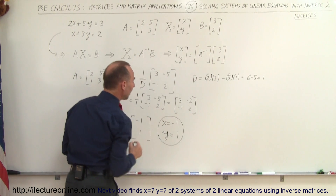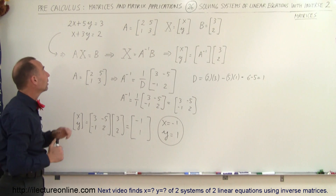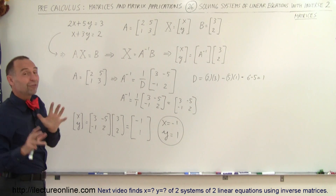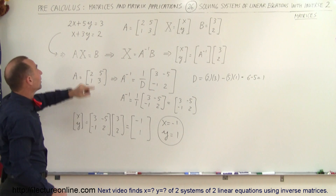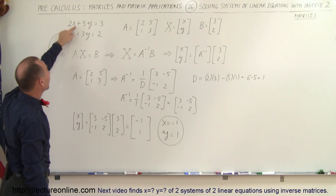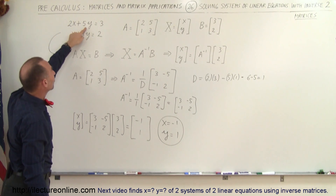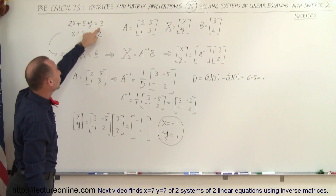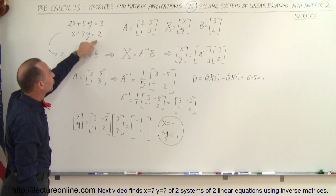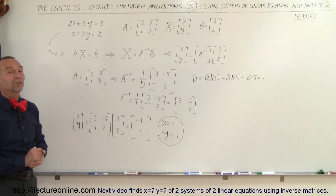Therefore, x is equal to negative 1 and y is equal to positive 1, and those two values satisfy the system of linear equations. To verify, plugging in x equals negative 1 and y equals 1: 2 times negative 1 is negative 2, plus 5 gives us 3, and negative 1 plus 3 gives us 2. That checks out, so we know our solution is correct.